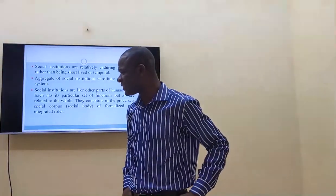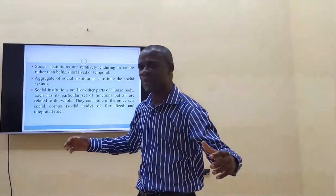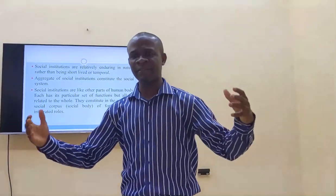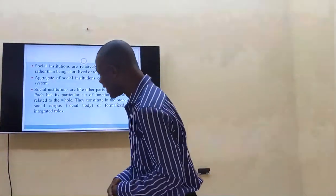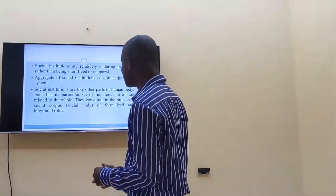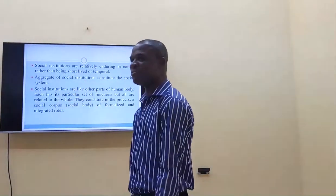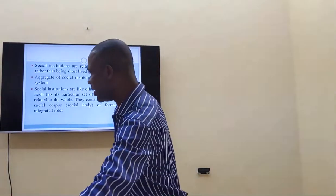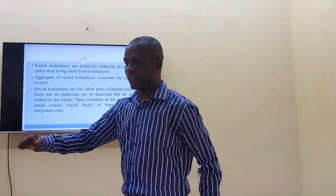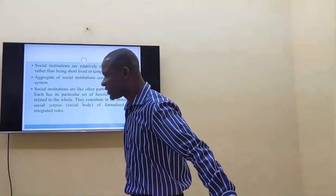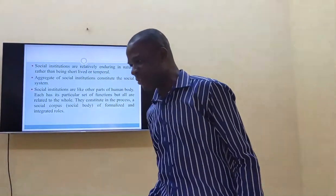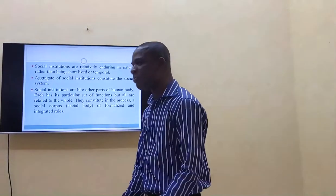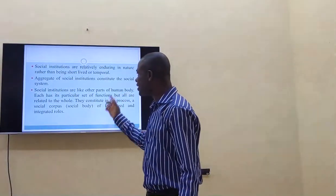Just like the human body, we have different sectors: the educational sector, the political sector, the family, marriage, and the religious sector — all of them working to make sure there is order in the society. These are social institutions, all working to ensure society functions like a human body. If one part is not working, it will affect the whole body, just like if the leg is not working, it affects the entire body.